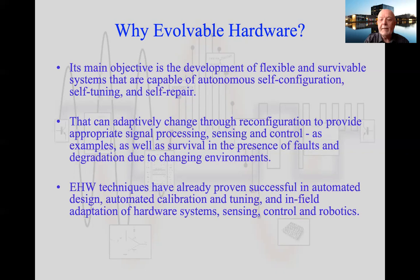Evolvable hardware has been proven in autonomous design and in calibrating systems — physical systems where the model simulating the original system differs from actual hardware. Evolution can be used to fine-tune and calibrate the system. We can also have in-field adaptation of hardware for sensing, control, and robotics. We'll see in the third lecture of this series applications to robotics, with a couple of examples in lecture one as well.